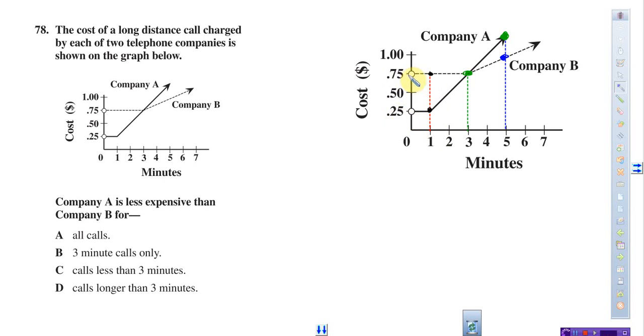One minute corresponds to 25 cents for Company A. Company B charges 75 cents. But over the long run, it would be smarter to go with option B because at six minutes, option B is much less expensive. At five minutes, it's less than a dollar, whereas Company A is more than a dollar.